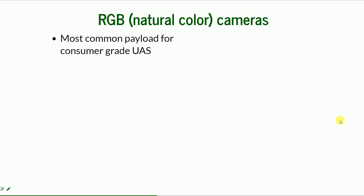The camera is the most common payload for consumer-grade UAS and can operate in photo or video mode. We are more interested in photo mode. Video mode is a fun feature — a lot of people buy drones to take video of their travels or fly over their property and take a cool video — but we want to process the data, and video usually has lower resolution.